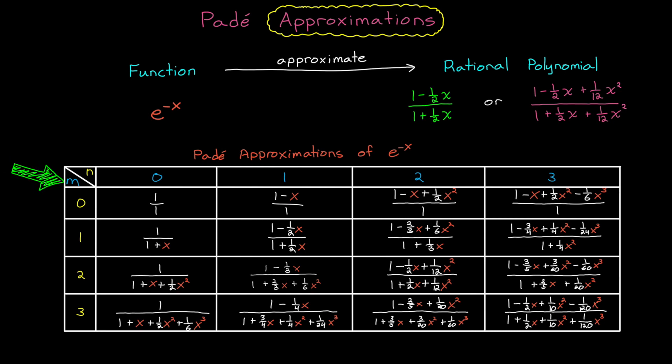There are an infinite number of Padé approximations for a given function. And generally speaking, the higher the order of the rational function, the better the representation becomes. So this is what a Padé approximation is. It's a rational polynomial, or a ratio of two polynomials of any order that approximates another function. So why is this important? What's the point of using an approximation when we can just use the original function?